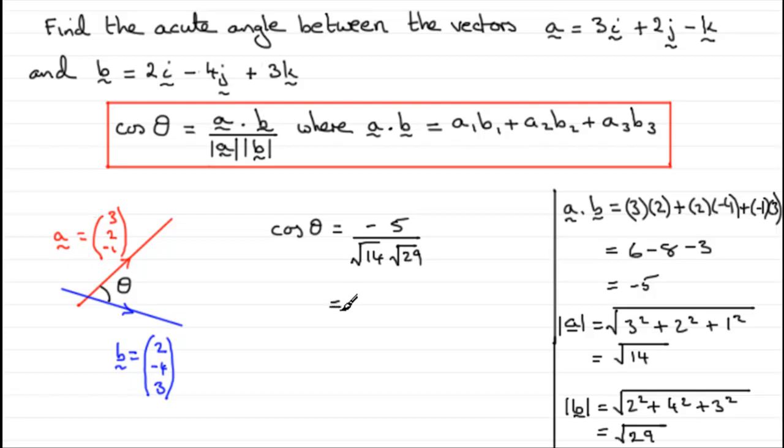So we just need to get on the calculator and work this out. So working this out, what we get is that this equals minus 0.2481 and so on. And to get theta, we just need to do the inverse cos of minus 0.2481 and so on. And if you do this on your calculator, what you'll get is 104.36 and so on degrees.